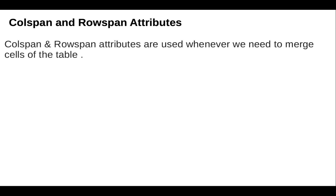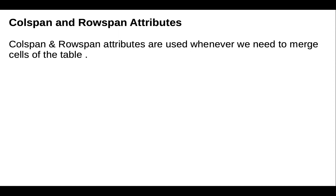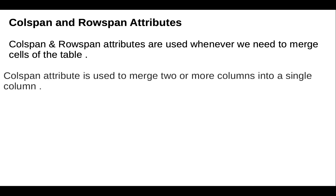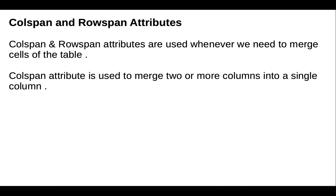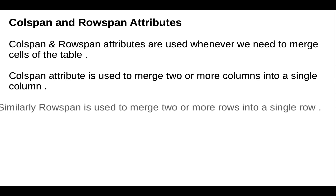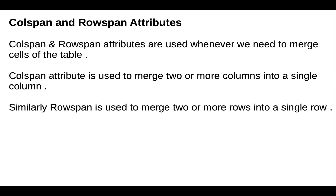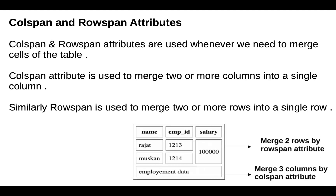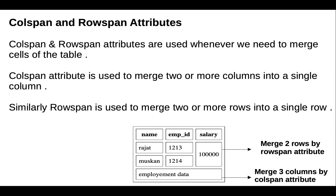Next are the colspan and rowspan attributes, which are used whenever we need to merge cells in a table. The colspan attribute is used to merge two or more columns into a single column. Similarly, rowspan is used to merge two or more rows into a single row. This diagram shows the meaning of colspan and rowspan.